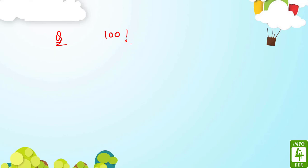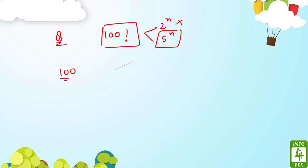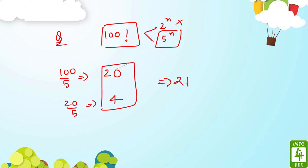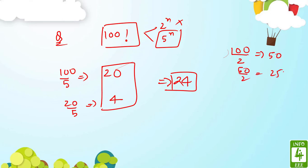Let's do 100! — how many zeros at the end? Since 2s will clearly be more, we just focus on counting 5s. Divide 100 by 5 → 20, divide 20 by 5 → 4. Since 4 is not divisible by 5, stop. Total 5s = 20+4 = 24. The number of 2s would be more (50+25+... = 75+more), but the limiting factor is 24. So 100! has 24 zeros at the end.